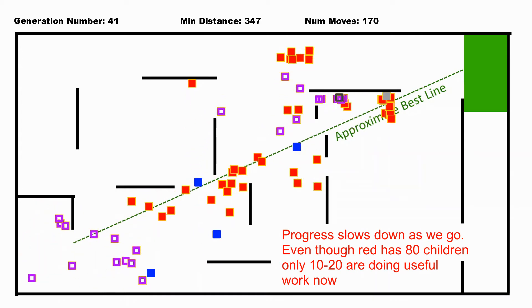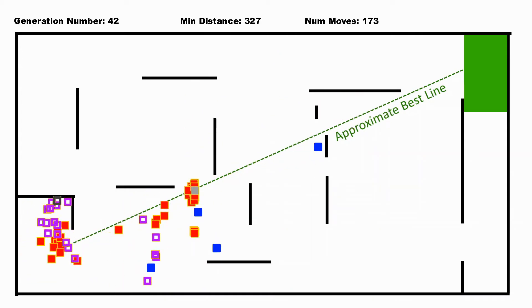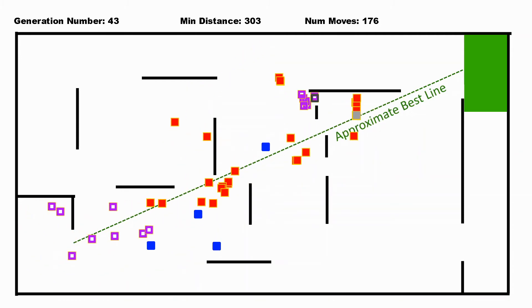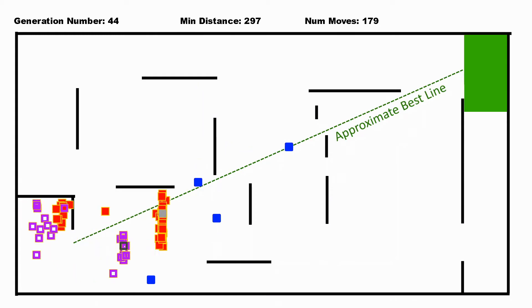Every turn they get to add three additional moves that they can make, which gets them closer to the goal, and each move can mutate each time.